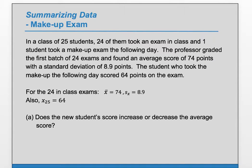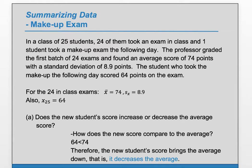Part A: Does the new student's score increase or decrease the average score? First, we can ask how does the new score compare to the old average? Well, 64 is less than the old average of 74, so this value brings down the average. That is, it decreases the average.